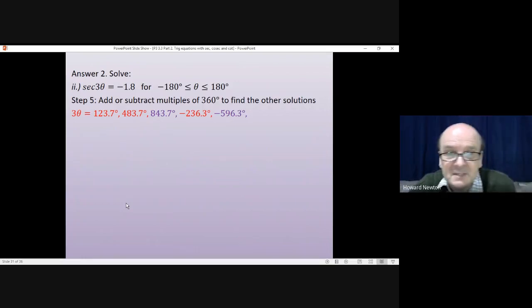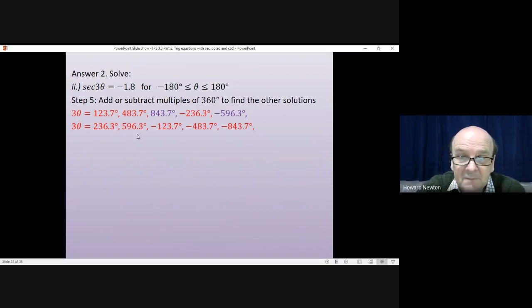Now, we'll be a little bit more smart this time. When I divide these by three, I have to get an angle which is between minus 180 and plus 180. It's immediately clear that when I divide those by three, they will be bigger than 180. So I can say straight away, I'm not going to need that one. I'm not going to need that one. They'll be outside the range. The second solution we found using symmetry was 236.3 degrees. We then add or take away multiples of 360 from that. That will give us these values. And again, we can look at them and we can say, well, which ones are going to be too big after we divide by three? Well, 596 will be bigger than 180. Minus 843 will be bigger than minus 180. So we won't be needing those two either.